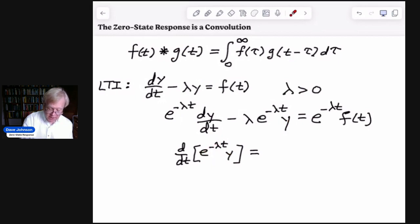The derivative of e^(-λt) is -λe^(-λt). So that's how we get the minus λe^(-λt) here. And so this is still going to be equal to our right-hand side e^(-λt) times f(t).